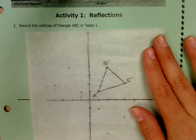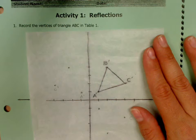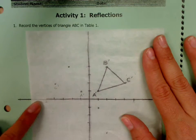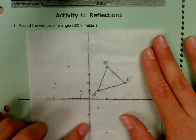And on number four, it says reflect the triangle across the y-axis. So which of these is my y-axis? The one that goes up and down. Okay.